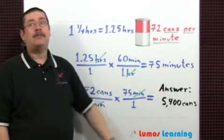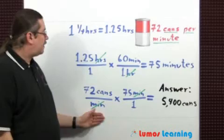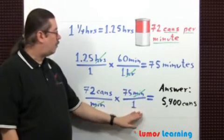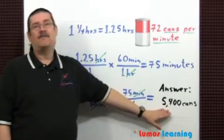Now the canning machine is able to fill and seal 72 cans per minute. Multiply this by 75 minutes over 1. The minutes cancel, I get the answer of 5,400 cans.